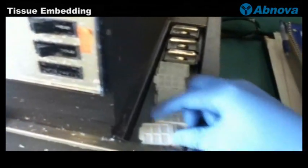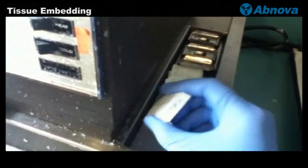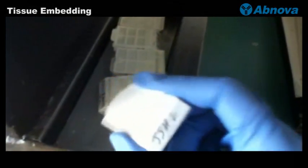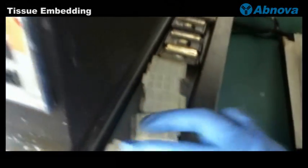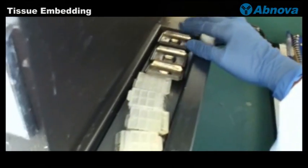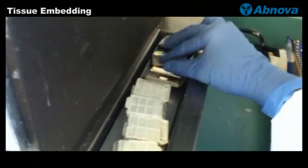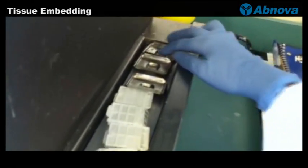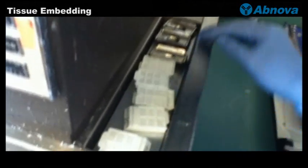We will put the bone chips cassette that has been labeled on the heat reservoir here that will keep them warm, so the paraffin will be nicely melted.